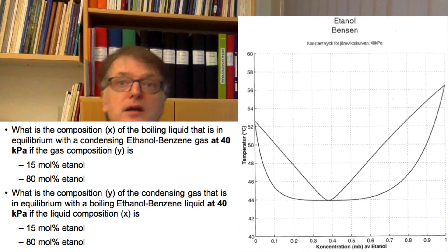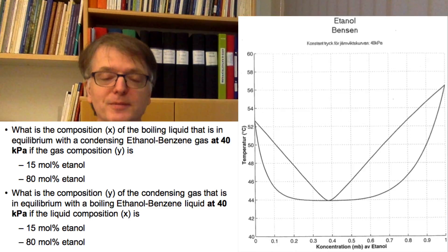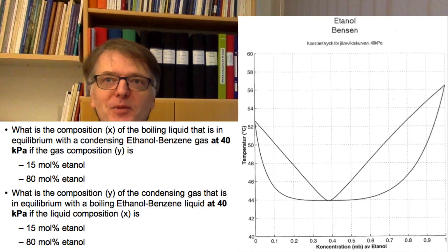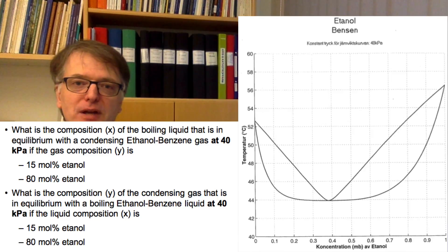So two different tasks there. And then there are two other tasks where you instead should answer what is the composition of the condensing gas that is in equilibrium with a boiling liquid that has 15 mole percent ethanol or 80 mole percent ethanol.